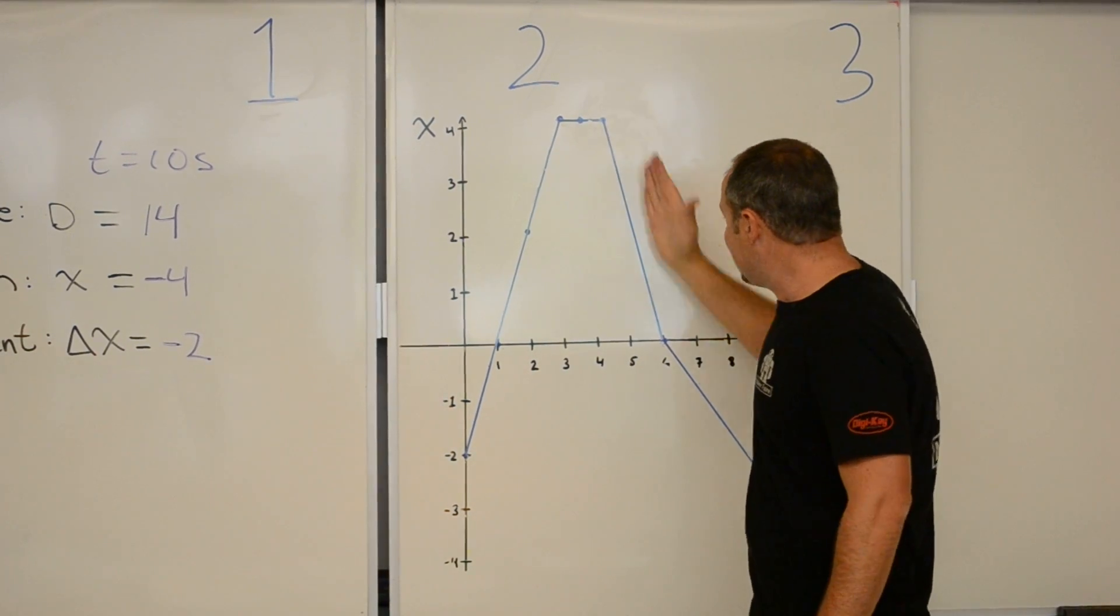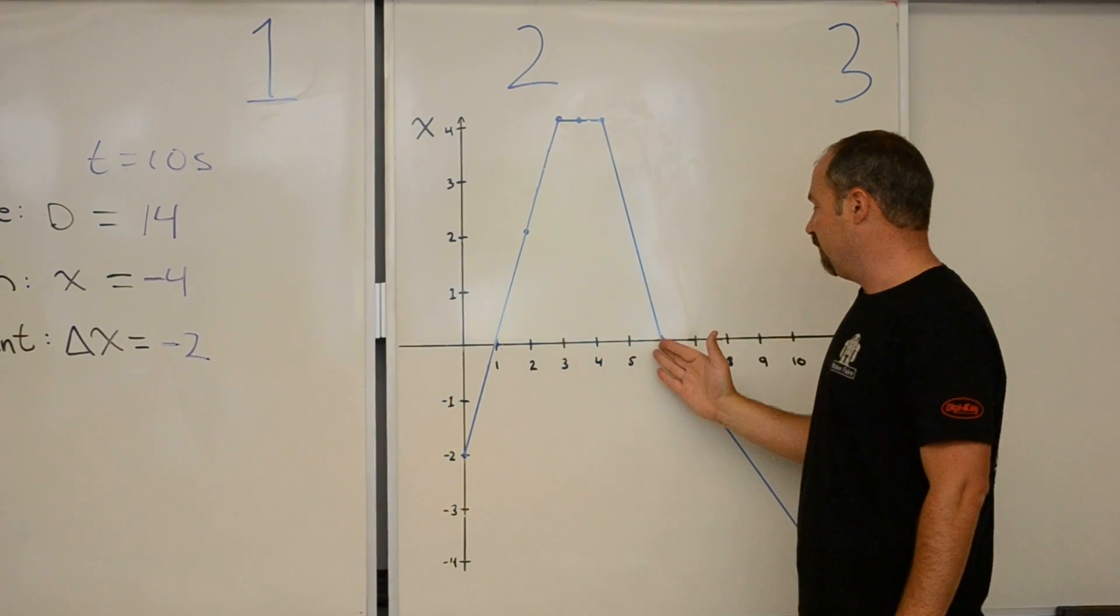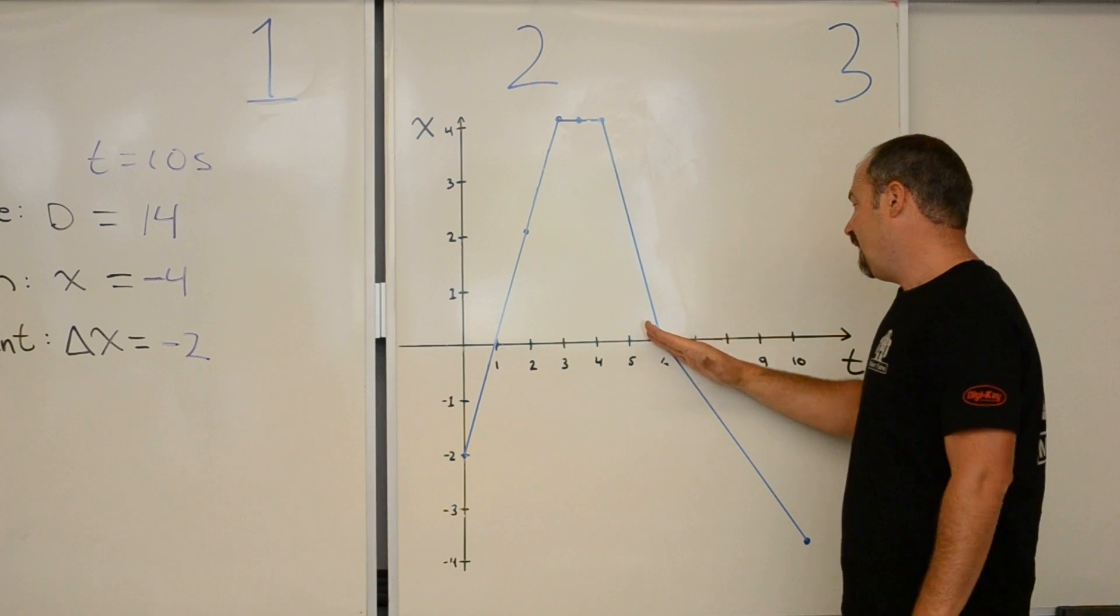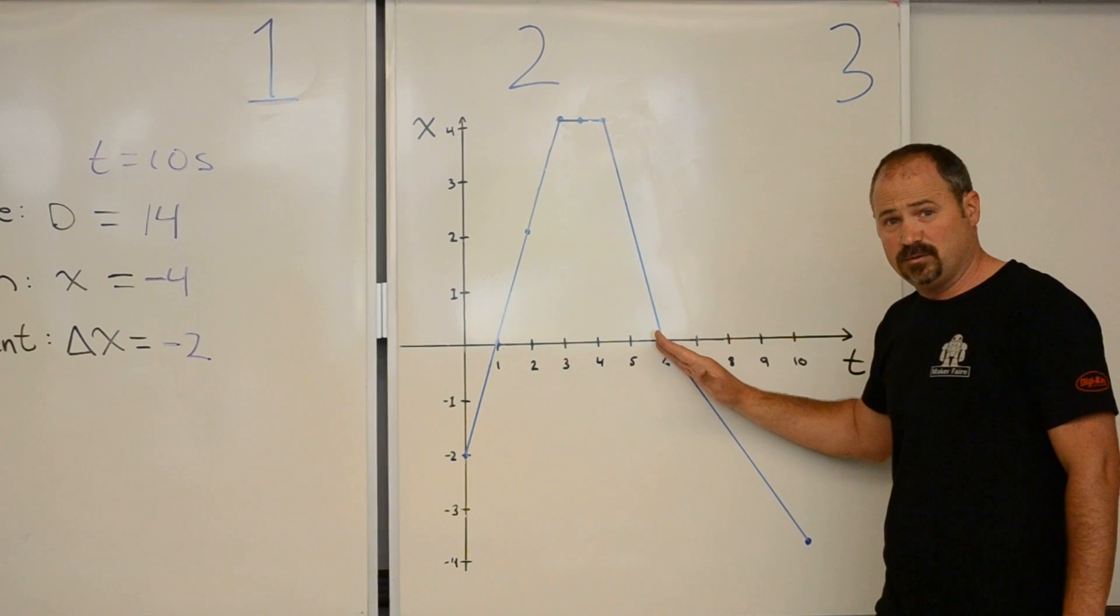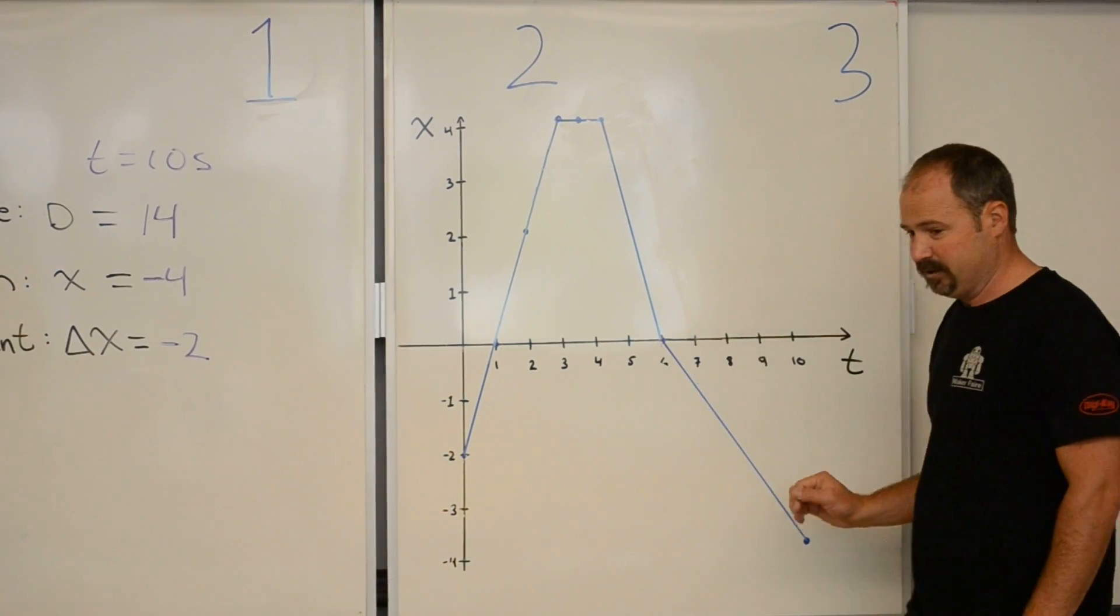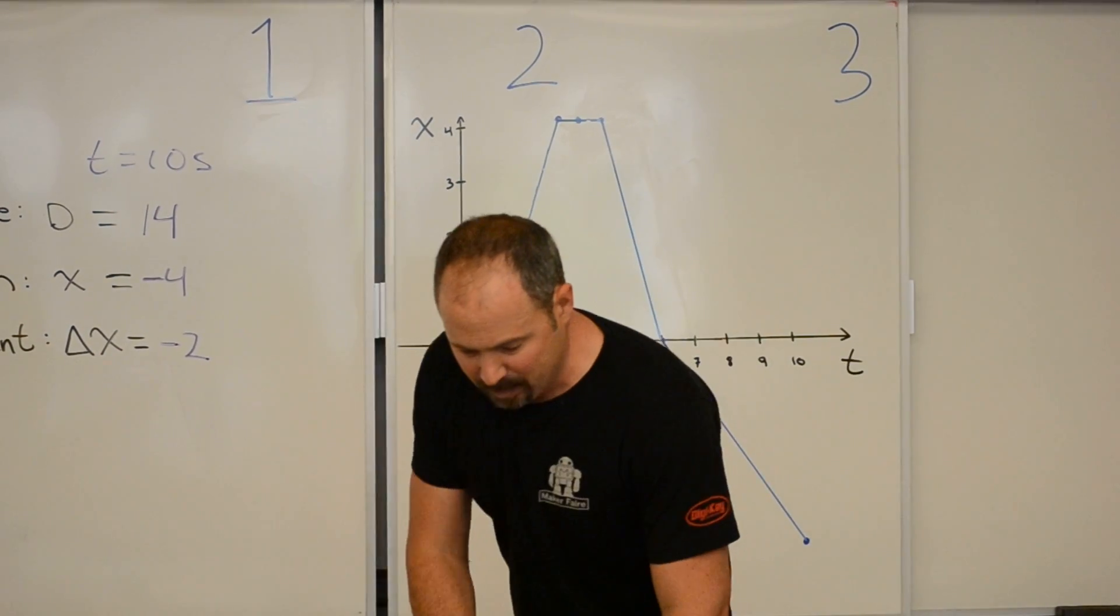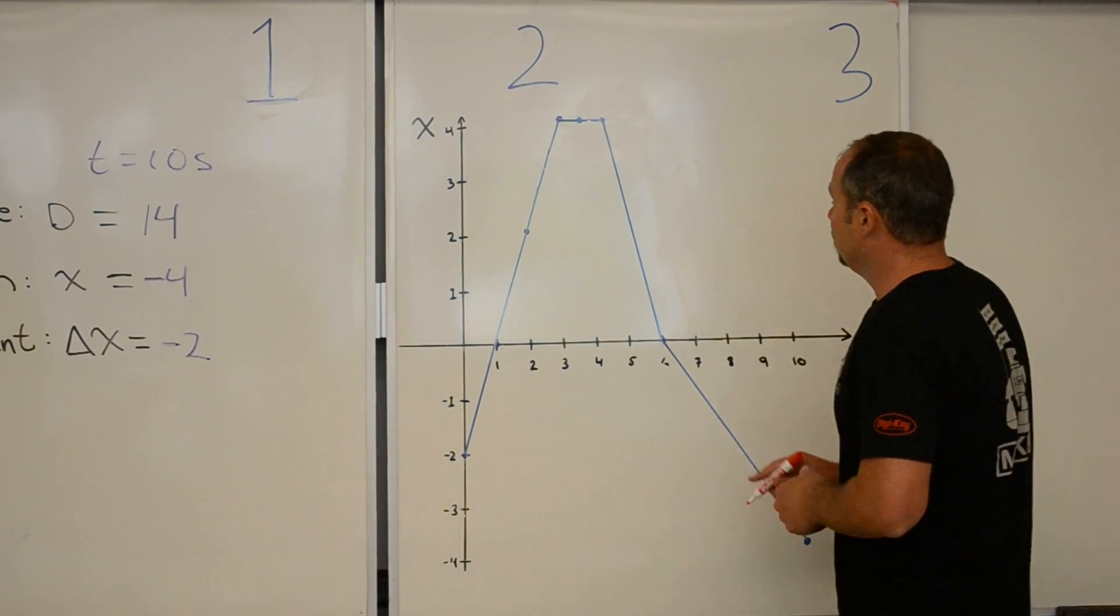Now, a steep negative slope, well, we're going in the negative direction rather quickly. A not so steep negative slope, we're moving in the negative direction more slowly. We can even do better than that. We can calculate these numbers.